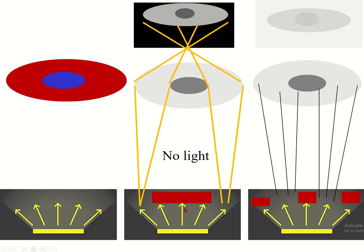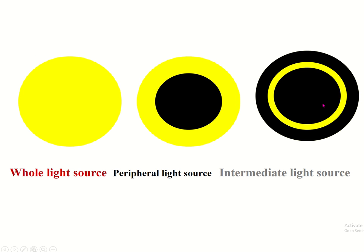In dark field microscopy, no central light passes through, creating a black background, and the peripheral light source visualizes the specimen. In phase contrast microscopy, only the intermediate portion of the light is used, so the background is grey and the specimen is also displayed in different shades of grey. In bright field microscopy, no covering of the light source is required.